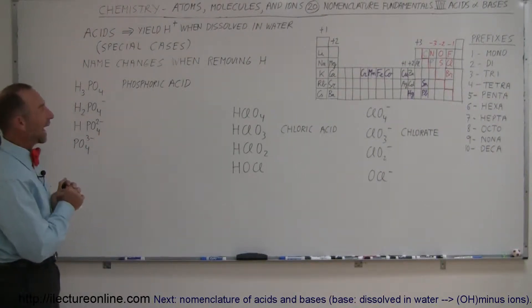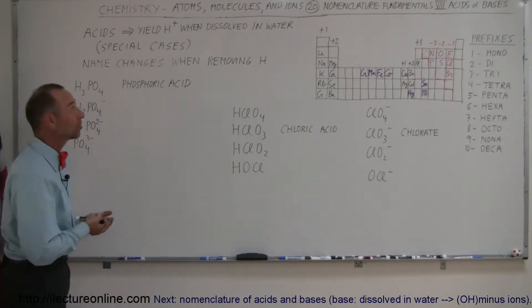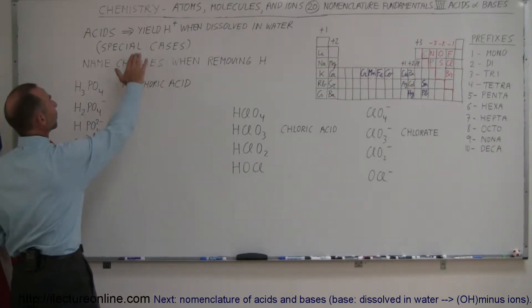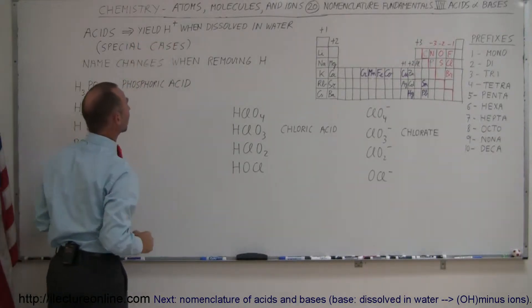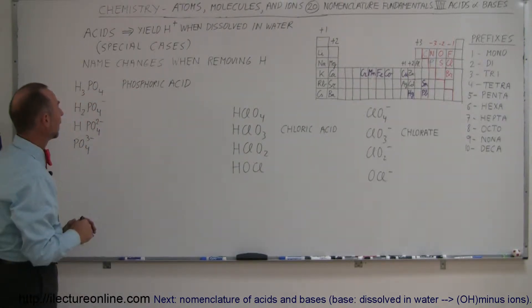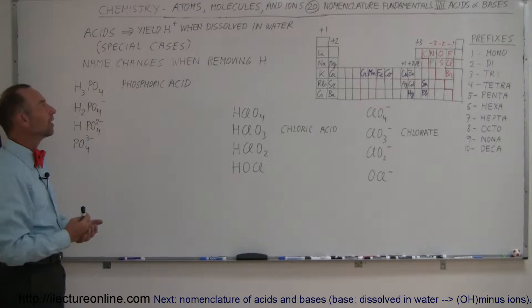Some more special cases for acids. This is part of our nomenclature series. An acid is something when placed in water yields the positive hydrogen ion that makes the water more acidic. It lowers the pH. And so what are some of the special cases on the naming convention?